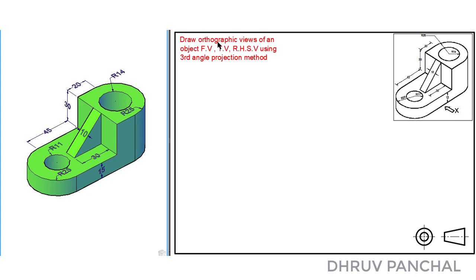So here is our data for the problem: draw orthographic views of an object — front view, top view, and right-hand side view — using the third angle projection method.